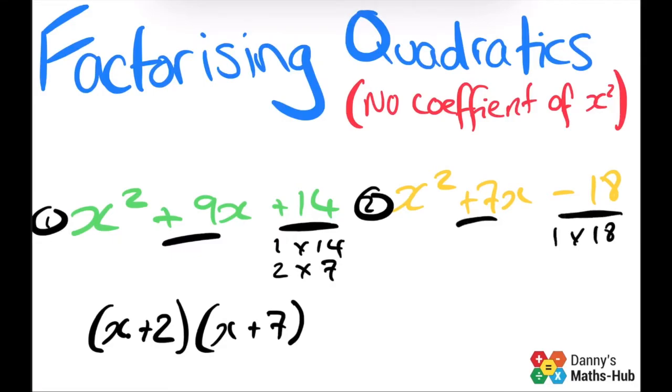Well, 1 times 18 gives us positive 18, so it'll either be minus 1 or minus 18. Neither of those add up to give us positive 7.